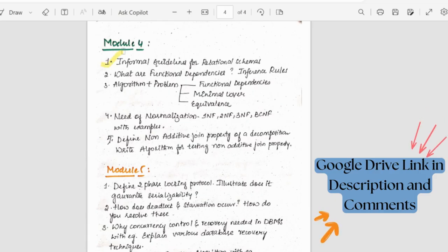Coming to fourth module, we have informal guidelines. Then what are functional dependencies and inference rules for that. Then there'll be a problem and they can ask the algorithm also for functional dependencies, minimal cover and equivalent.